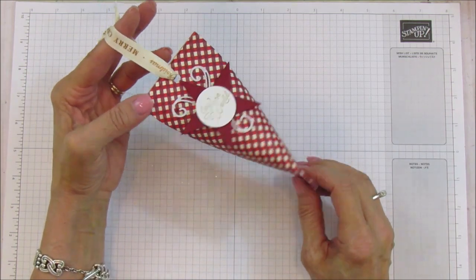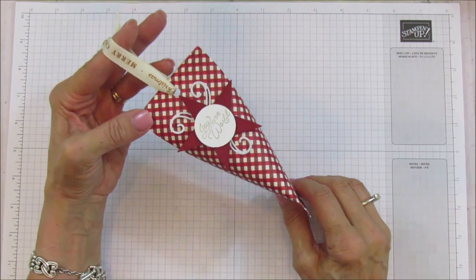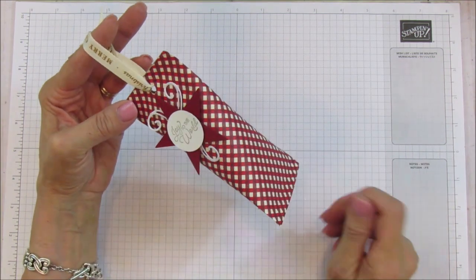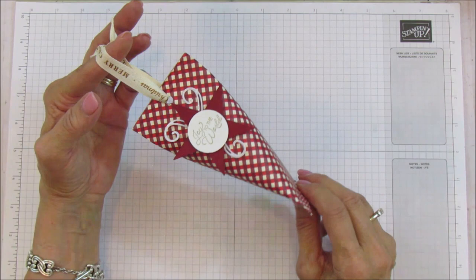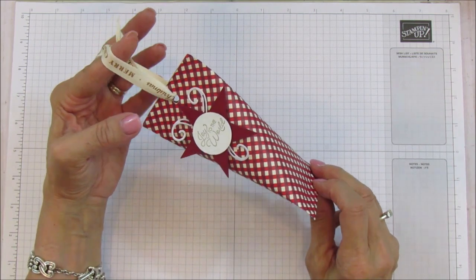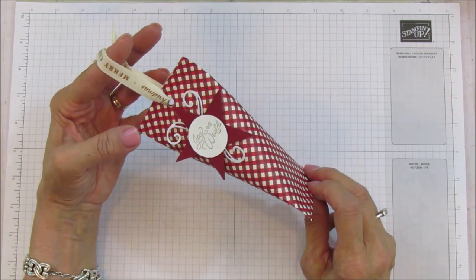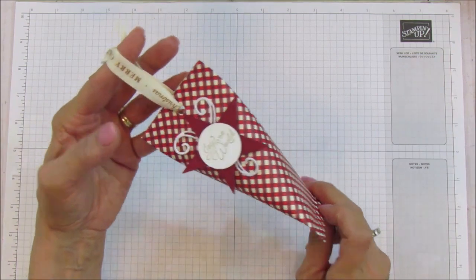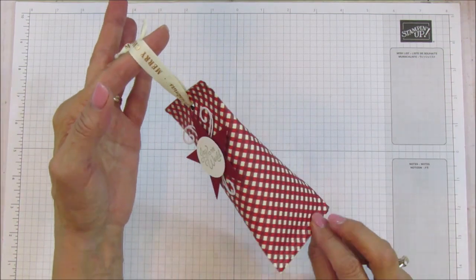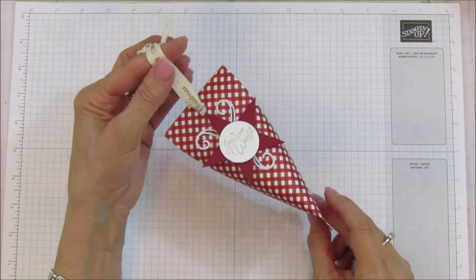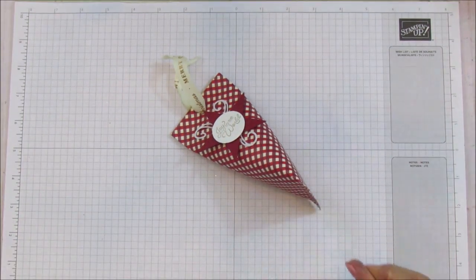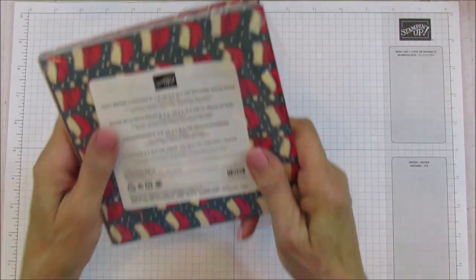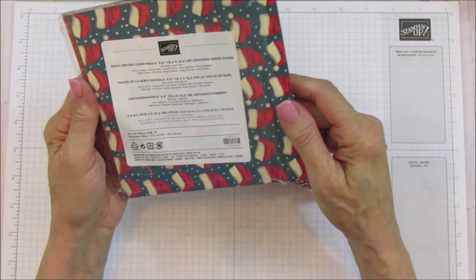They are sour cream containers and this one's a really good size to fill with chocolates or Hershey kisses, anything like that. It's super cute and I love this paper. This paper is really retro, so if you like that retro look, this Night Before Christmas, it's a 6x6.